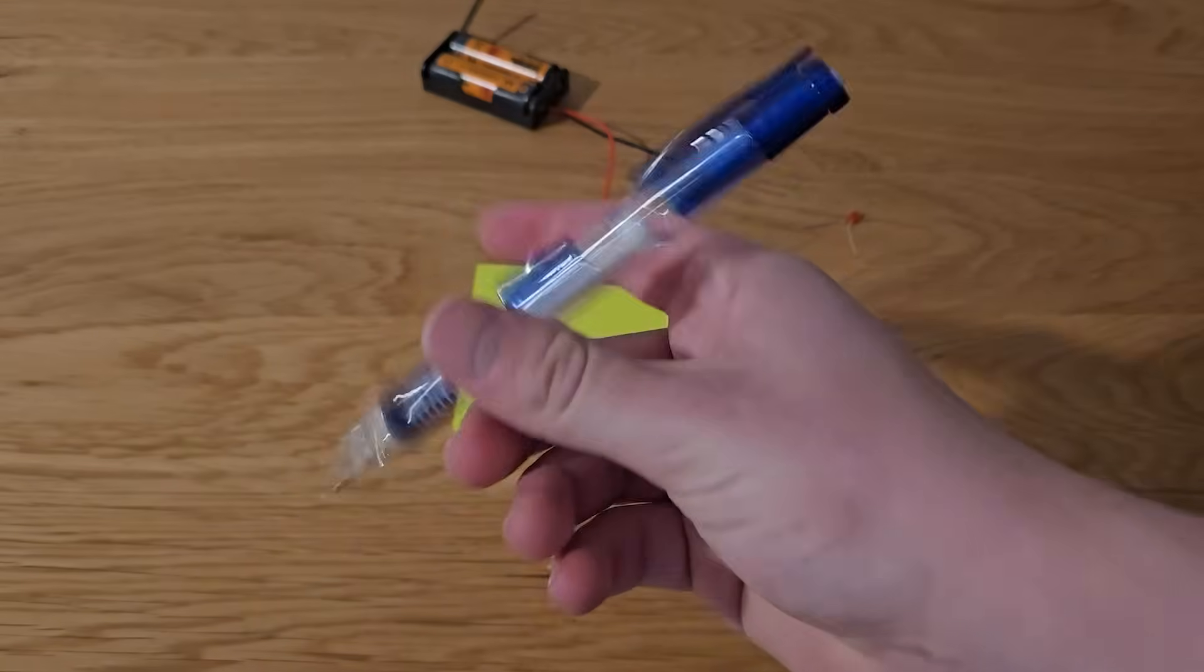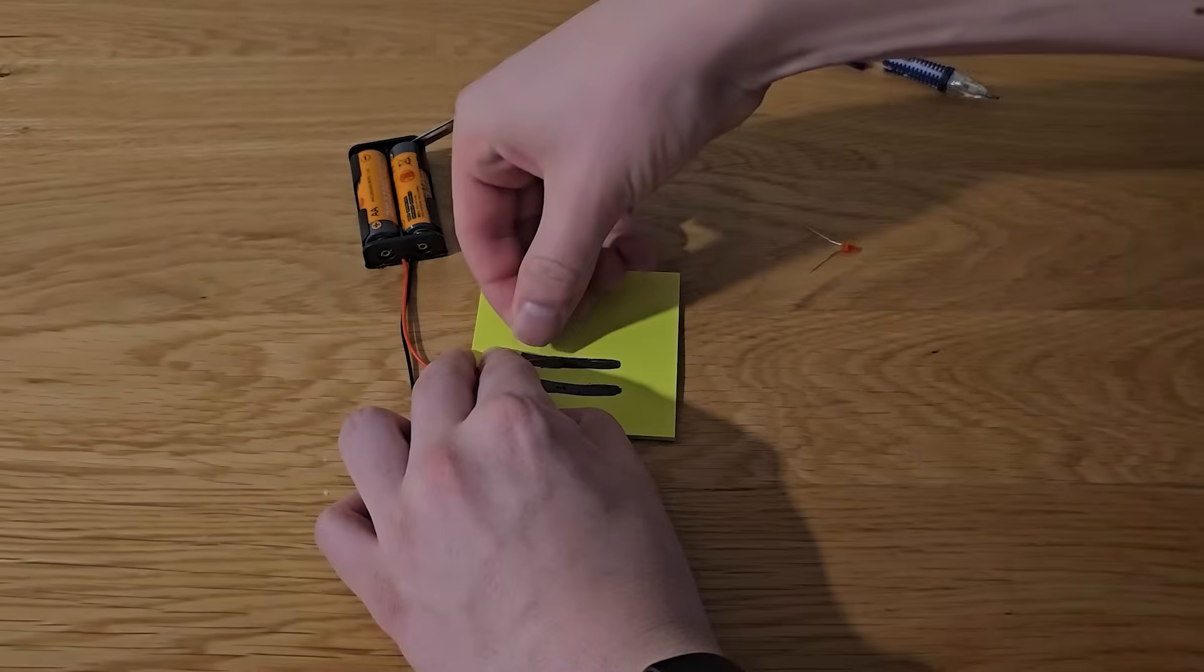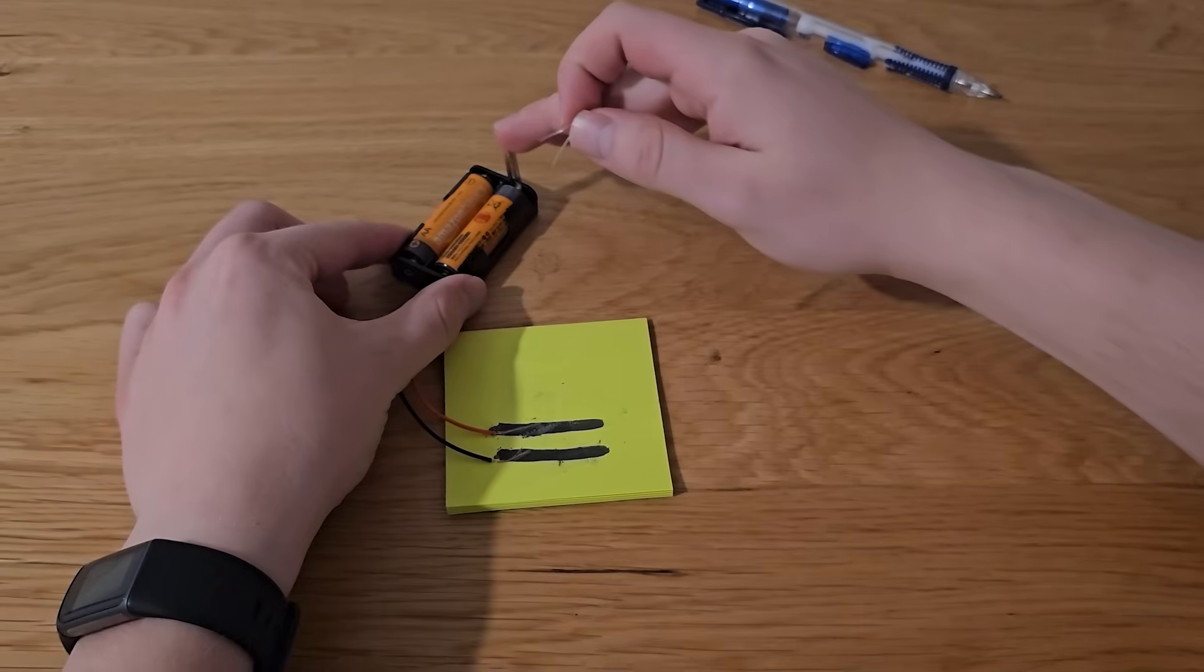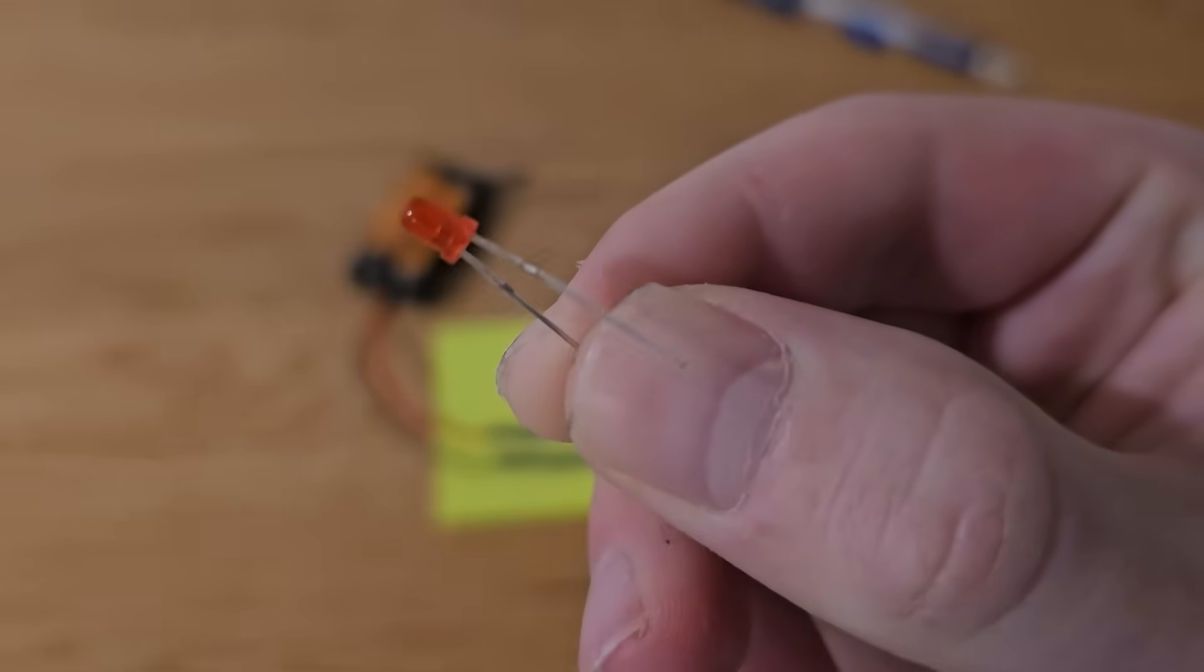Round 1, let's begin. First up take a graphite pencil and draw two thick lines. Then tape the positive and negative terminals of a 3 volt battery to the lines. Close the switch on the battery holder and now if you complete the circuit with an LED facing the correct way, the LED will turn on.